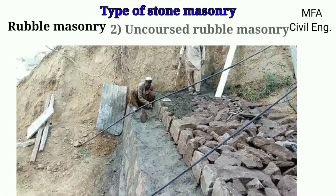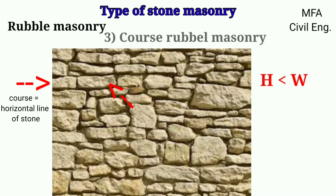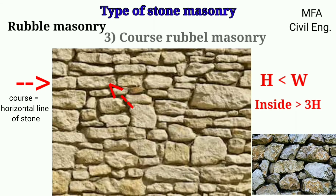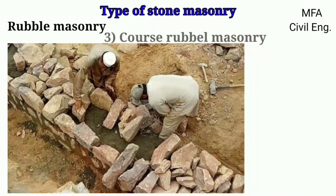In coarse rubble masonry, stones are laid in level courses. In each course, header stones of full course height are placed at certain intervals. Each header stone has a width not less than its height and is inserted into the wall at least three times its height. The size of stones used in the masonry are between 50 mm to 200 mm. Stones of equal height should be used in every course, and joints are not more than 50 mm in thickness. The stone used between header stones should not be smaller than 50 mm in thickness, and header stones of successive courses should not be placed one above the other.